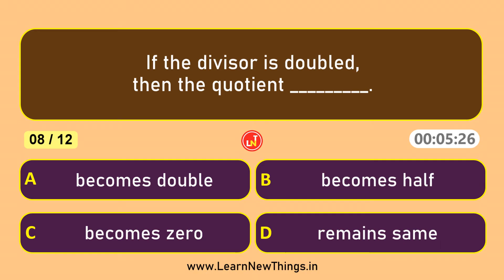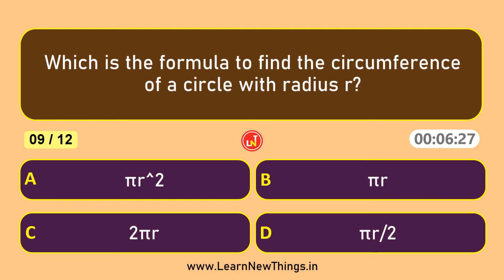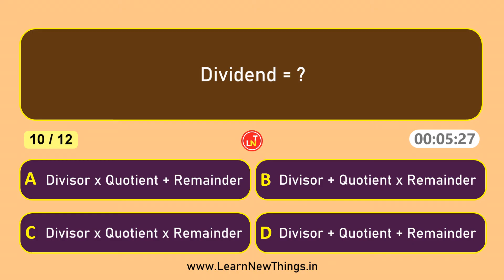March 14. If the divisor is doubled, then the quotient becomes half. Which is the formula to find the circumference of a circle with radius r? 2 pi r. Dividend equals divisor into quotient plus remainder.